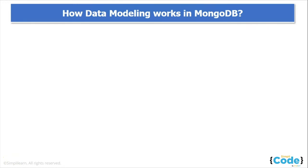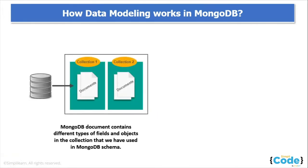Let us now discuss how data modeling works in MongoDB. Unlike SQL databases where you must determine and declare a table schema before inserting data or performing any operations, MongoDB's collections by default do not require the documents to have the same schema. The documents in a single collection do not need to have the same set of fields, and the data type for a field can differ across documents within a collection. You can change the structure of a document in a collection by adding a new field, removing an existing field, or changing field values to a new type.